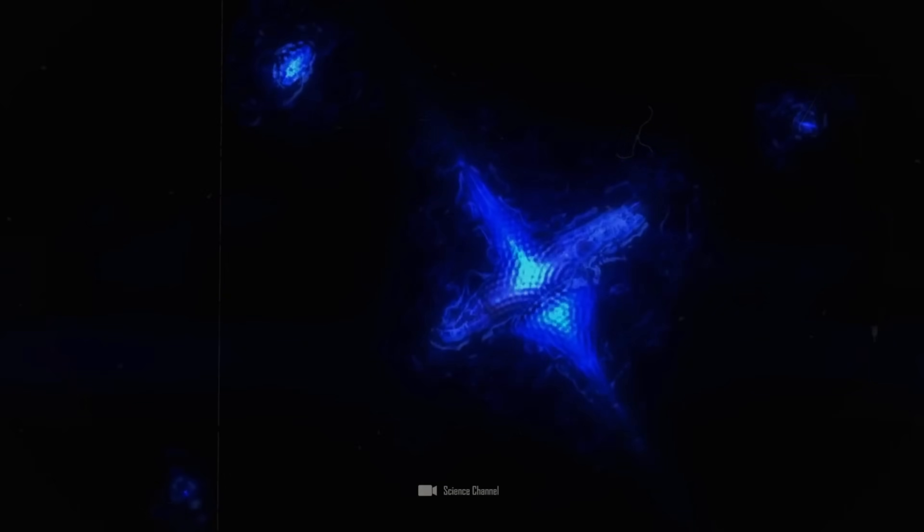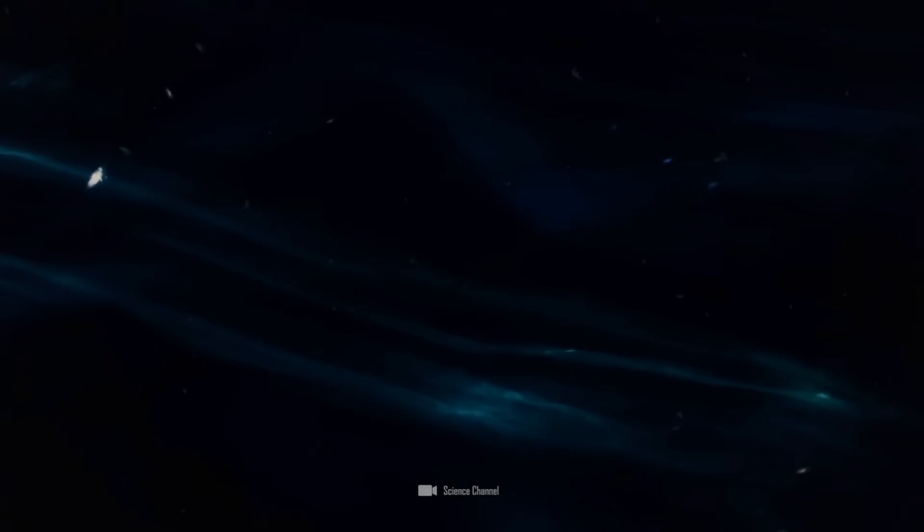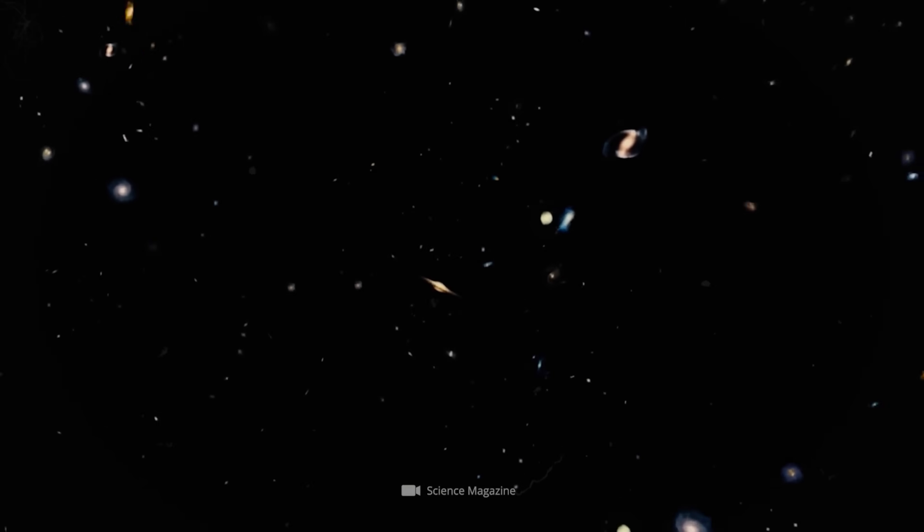This web is made of filaments, huge, thread-like structures of matter stretching hundreds of millions of light-years. And in between these filaments are voids, vast regions with relatively little matter.